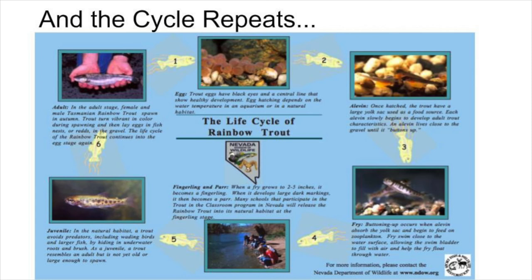Rainbow trout are iteroparous, meaning they can spawn more than once. Salmon, on the other hand, are semelparous, meaning they spawn once and then they die.